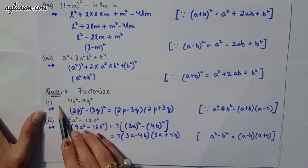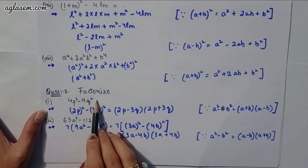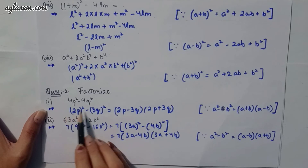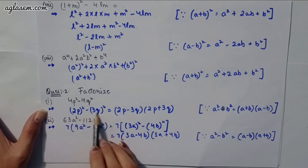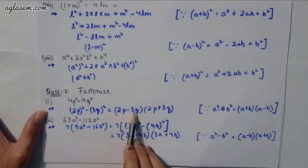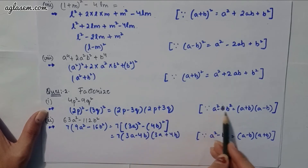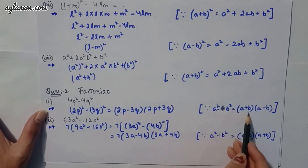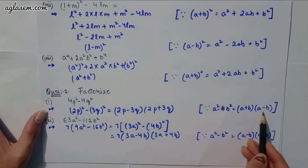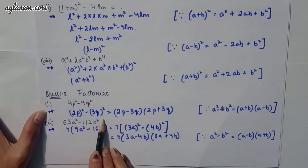Moving to the second question — factorize. First part: 4p² − 9q². We write (2p)² − (3q)² and apply the identity a² − b² = (a − b)(a + b), giving (2p − 3q)(2p + 3q).